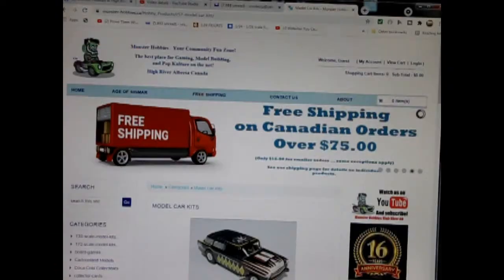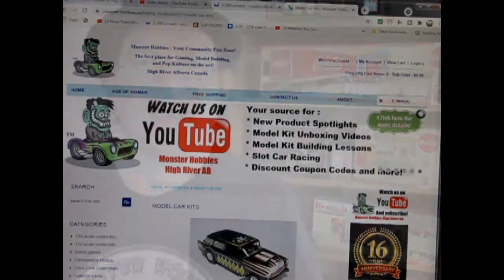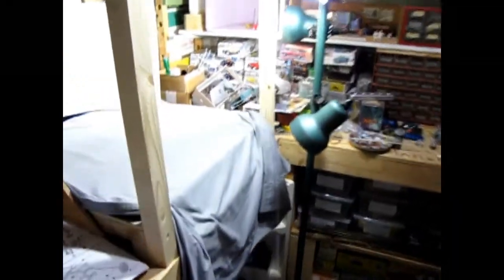Today we will be looking at the 1975 Ferrari 308 GTB. Now this model kit comes out of my own personal collection and this is the wrong box lid for the model kit. However, you can see all of our available model kits at www.monster-hobbies.ca. I will leave a link in the description below. Now let's go down to our bench and see what's in the box.